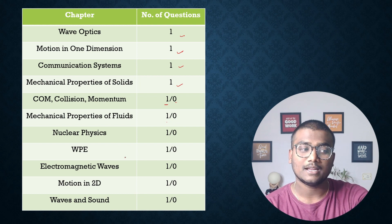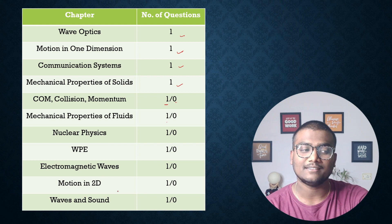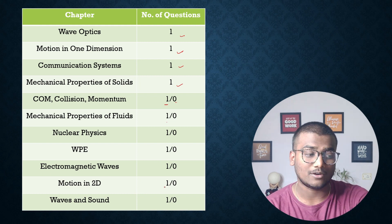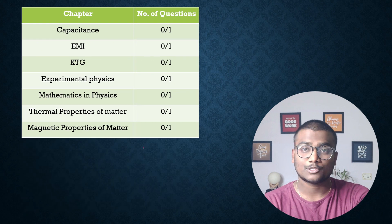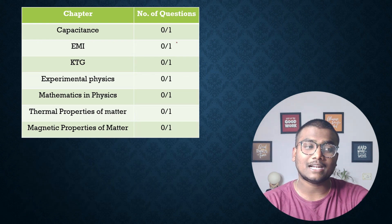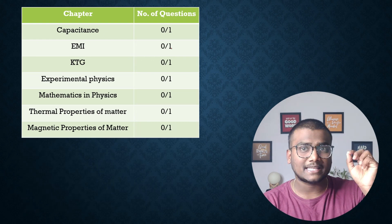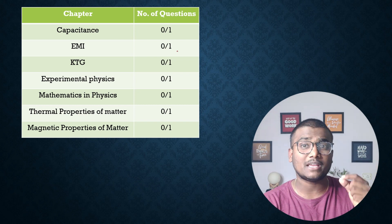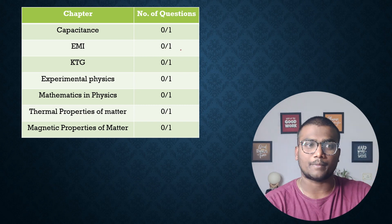Nuclear Physics: one or none. Work Power Energy: one or none. Electromagnetic Waves: one or none. Motion in 2D: one or zero. Waves and Sound: one or zero. From here, majority chances you'll get zero questions.